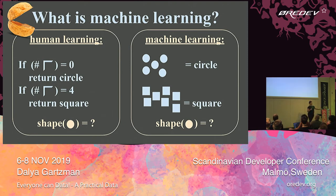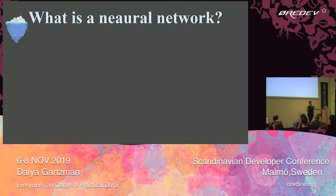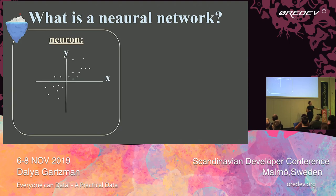Third question: what is a neural network? Tip of the iceberg, really — again, not a crash course, just establishing some common language. So what is a neuron? I'm going to tell you a little secret. A neuron is just a fancy name that condescending people use to call a function.